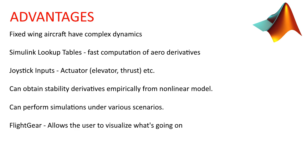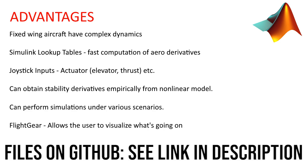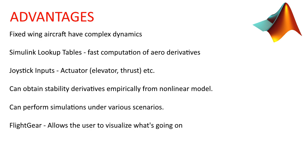Some of the advantages are listed here, but when it comes to fixed-wing aircraft, they have very complex dynamics. For example, the aerodynamic derivatives need to be computed very quickly, and this can be achieved via Simulink lookup tables. In addition, if you're linearizing at some condition, you have to calculate what is known as the stability derivatives, and this you can obtain empirically from the model itself. Lastly, we can perform simulations under various scenarios and look at how the aircraft behaves.